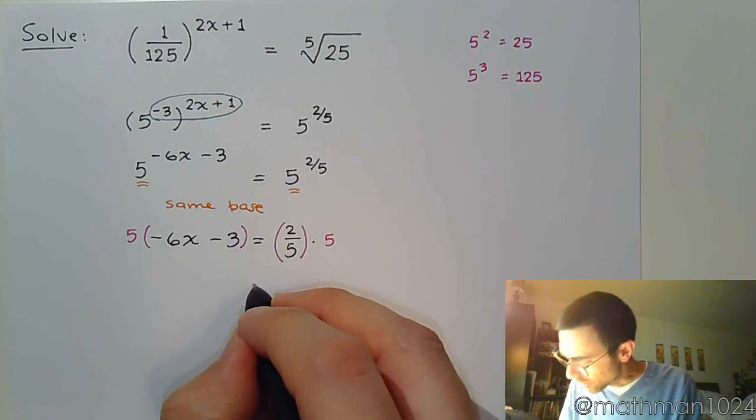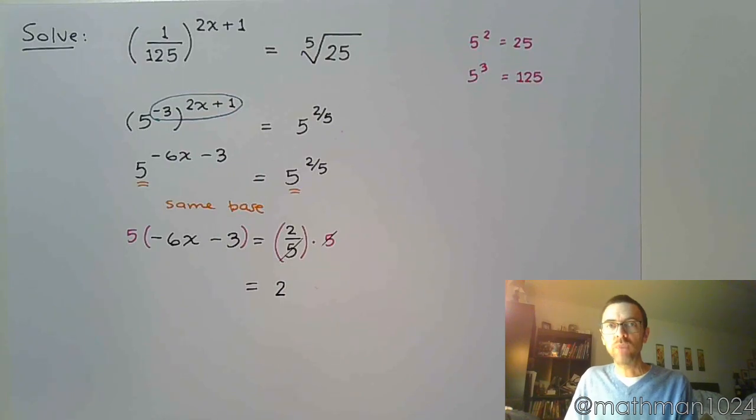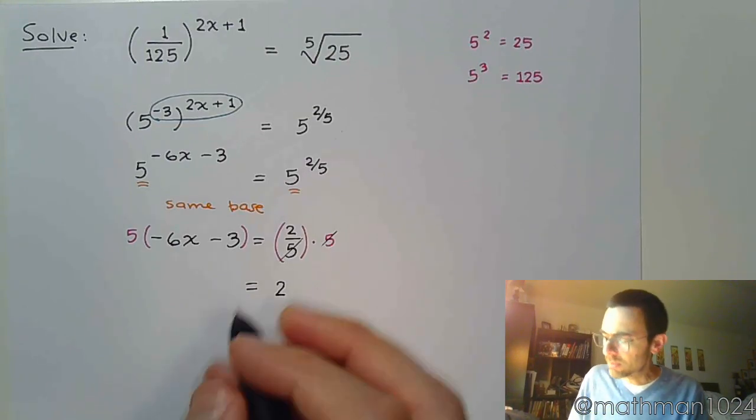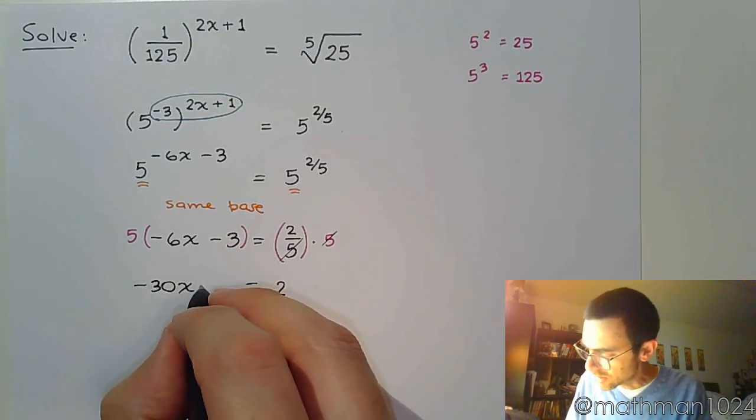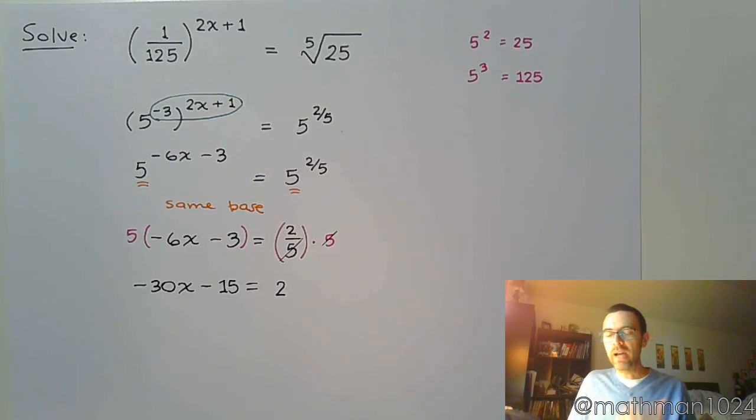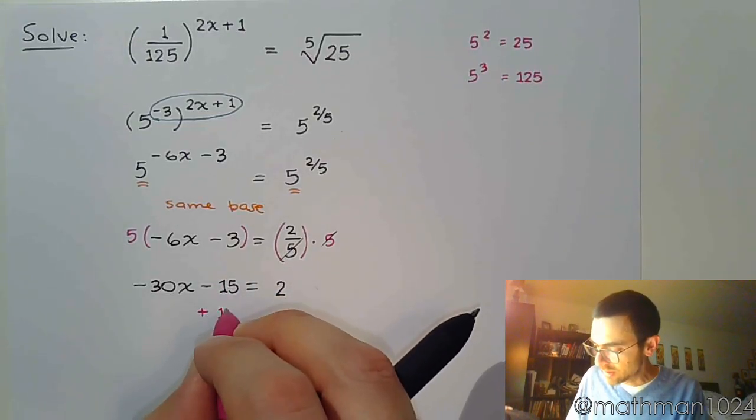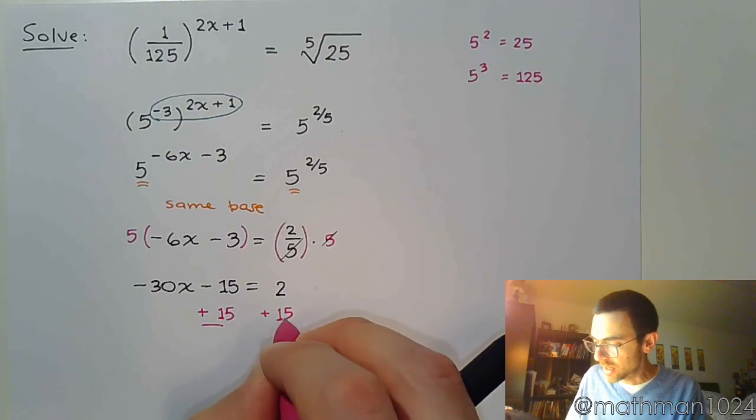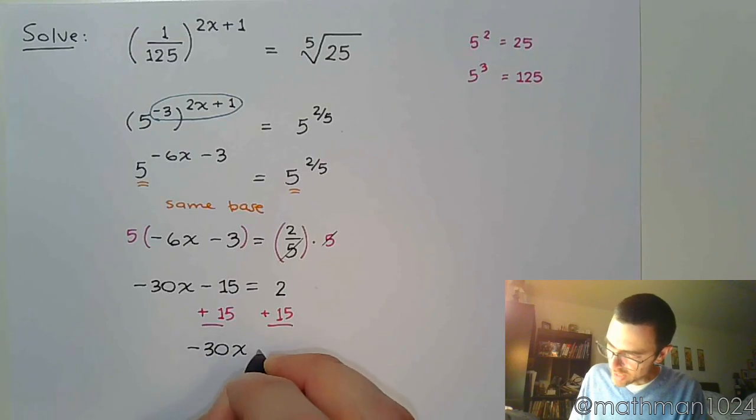Why am I doing times 5 on the right side? Those 5s reduce and I'm just left with 2, right? So we get rid of the fraction. We may make the numbers bigger on the left side, but it's for the best. So we now have negative 30x minus 15, and so now I have a nice linear equation, super easy to solve.